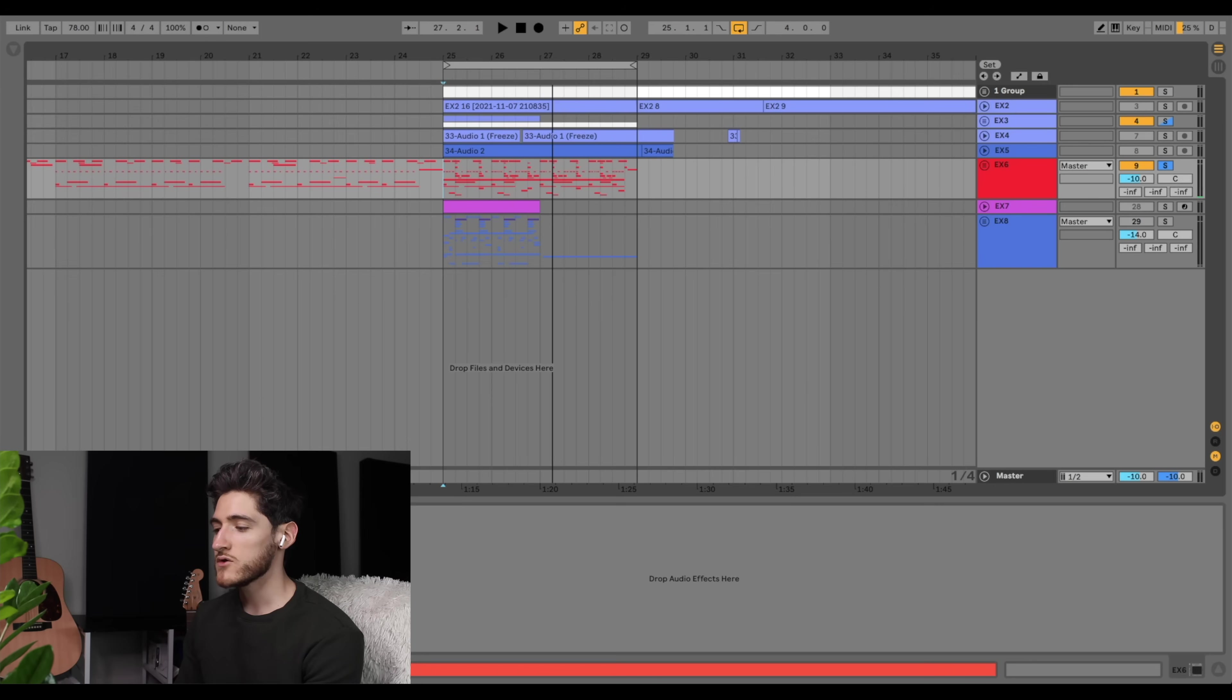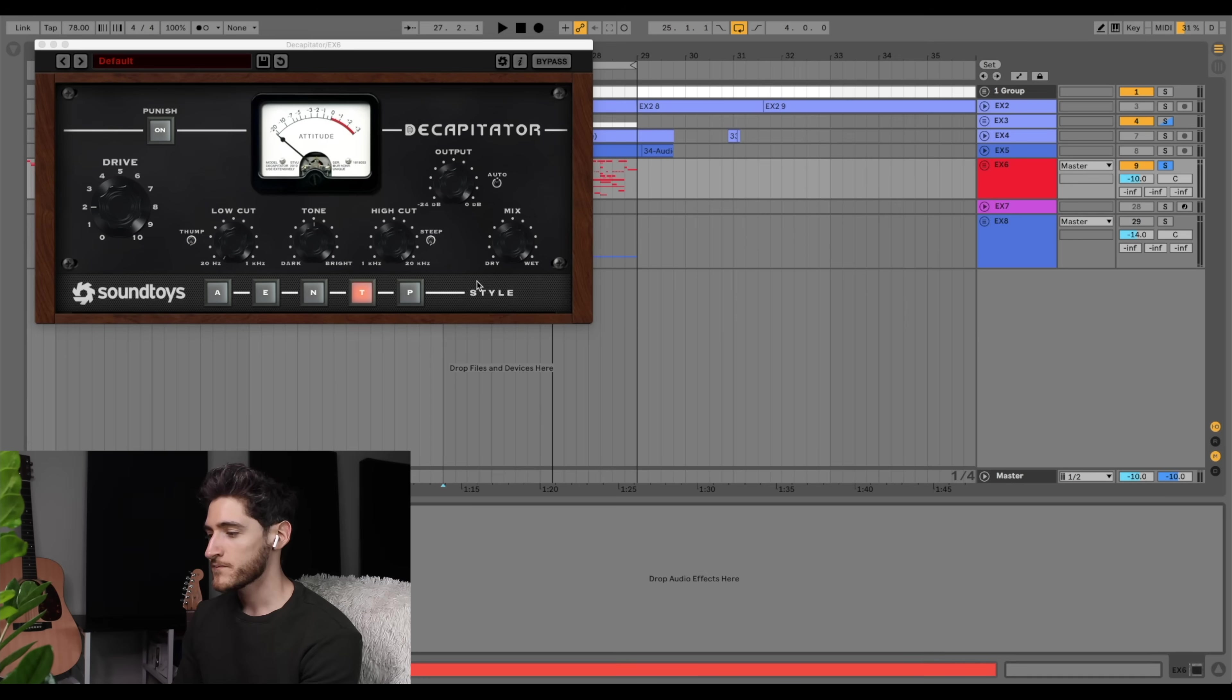For the asymmetric sound, I'm going to use the plugin Decapitator. The T setting in Decapitator tries to emulate the sound of a triode tube, which are common in tube amps and give rise to lots of even harmonics.